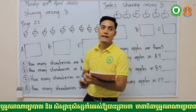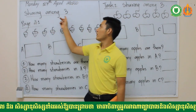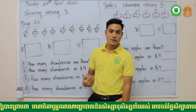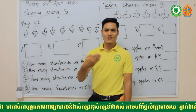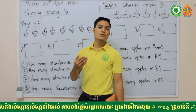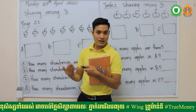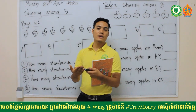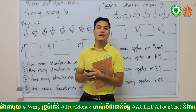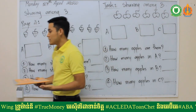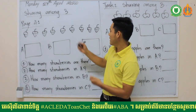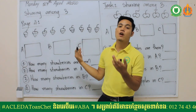What we're going to learn now is sharing among three. Sharing among three is similar to sharing between two, but instead of two people, you need to divide things among three people or three groups of people. Here is the example with strawberries.